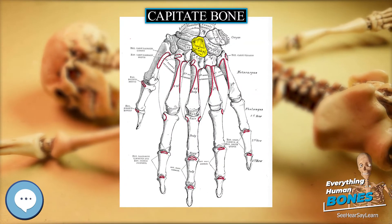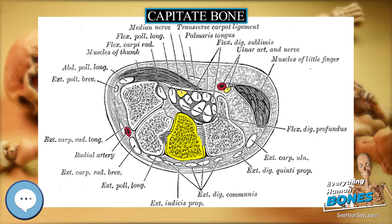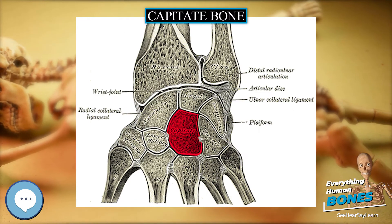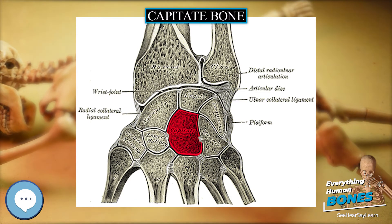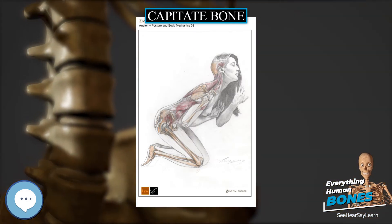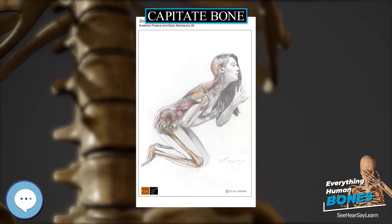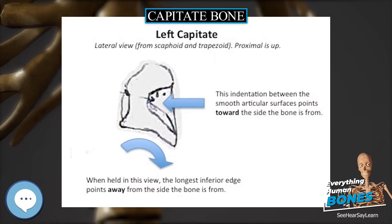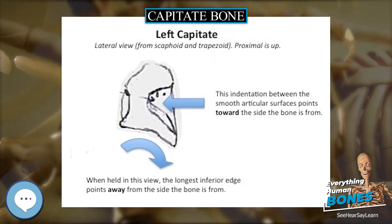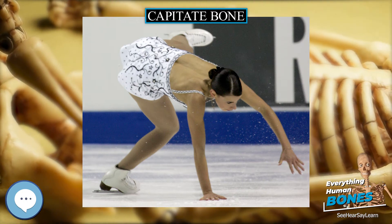A capitate fracture accounts for 1.3% of all wrist fractures. Isolated fractures of the capitate comprise only 0.3% and are often non-displaced. This is since the capitate is at the center of the carpal region and is therefore quite well protected. Capitate fractures often occur together with fractures of another carpal bone, the scaphoid.